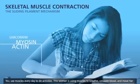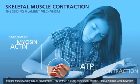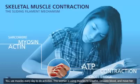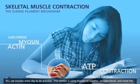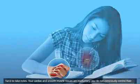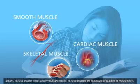You use muscles every day to do activities. This woman is using muscles to breathe, circulate blood, and move her hand to take notes. Your cardiac and smooth muscle tissues are involuntary — you do not consciously control their actions. Skeletal muscle works under voluntary control.